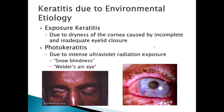The last type of keratitis is due to environmental exposure. Exposure keratitis is caused by dryness of the cornea from incomplete or inadequate eyelid closure — elderly patients whose eyes don't shut correctly can get this, and it's important to make sure they have eye drops to keep the eyes lubricated. Photo keratitis is due to intense ultraviolet radiation exposure — this happens in skiers without goggles or welders who don't use their mask, known as 'welder's arc eye.' Photo keratitis is extremely painful.